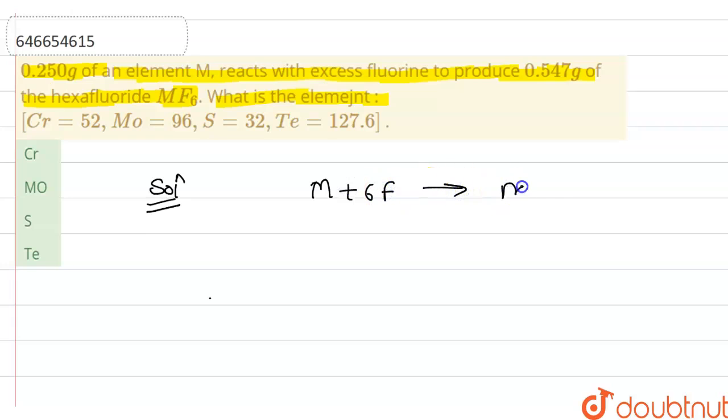Moles of M equals moles of MF6 because they have equal number of moles in the equation. So we can say that weight upon molar weight equals weight upon molar weight in both cases.